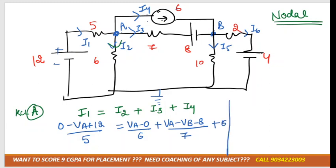In this case, both directions are the same, so we take positive. If the directions are opposite, then we take negative. For node B, I3 plus I4 equals I5 plus I6. I3 is moving from A to B, so it's VA minus VB minus 8 divided by 7.